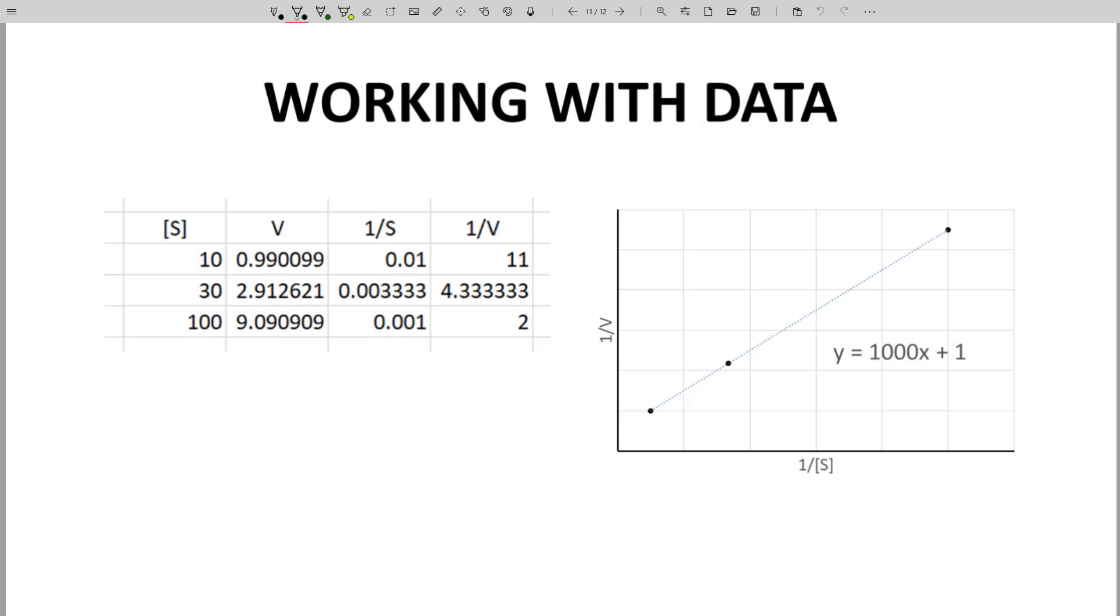Here on the left are three V versus S points. We never determine Vmax and Km with just three points, but this is just a demonstration. We can take the reciprocal of each value, and now we have 1 over V, 1 over S data points.